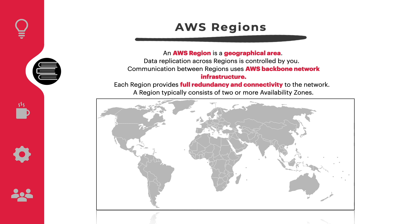To achieve fault tolerance and stability, a region is isolated from one another. The resources in one region are not automatically replicated to other regions. When you store data in a specific region, it is not replicated outside that region. It is your responsibility to replicate data across regions if your business needs require it.